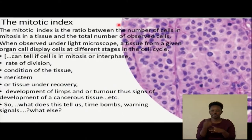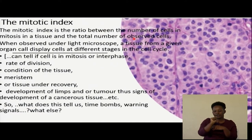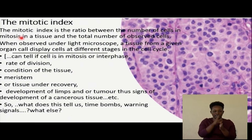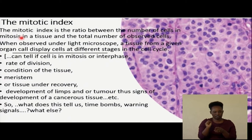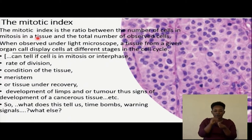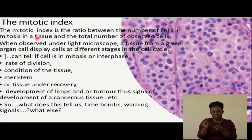Here we have the description: the ratio between the number of cells in mitosis in a tissue — so it can be plant or animal — and the total number of all the cells under the slide, all the cells in the image, all the cells under consideration.